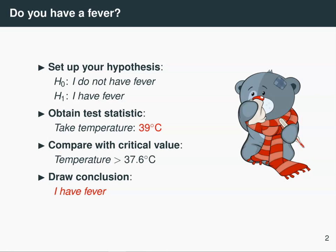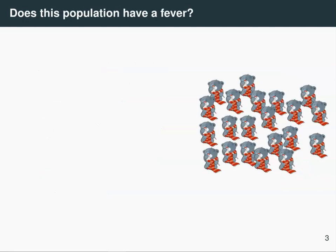So you can frame everyday decisions as if they are a hypothesis test. Now in a statistical hypothesis test, the difference is that you're generally interested in a population and not just one person. Maybe you have a population of people who don't feel well and you want to see if on average they have a fever.